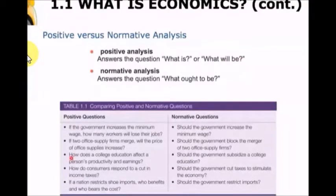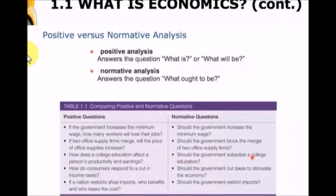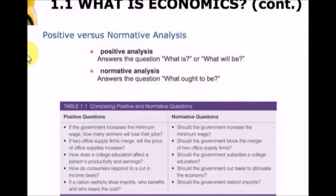An example of a positive question would be: how does a college education affect a person's productivity and earnings? A normative question asks 'what ought to be' or 'what should we do.' On that same topic, a normative question might be: should the government subsidize a college education? Positive questions are more objective and straightforward to answer, while normative questions involve differences of opinion based on values.